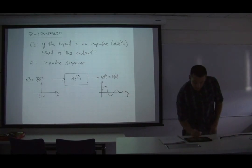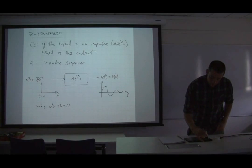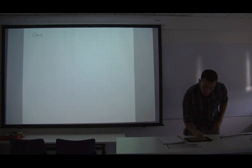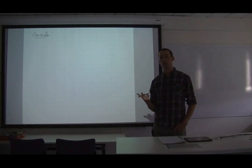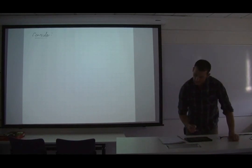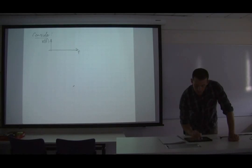So why do this? Let's build the complexity up a little bit. Consider a situation where rather than one impulse, we have two impulses separated in time. So we draw against time — X of T has one impulse at T1 and another one at T2.